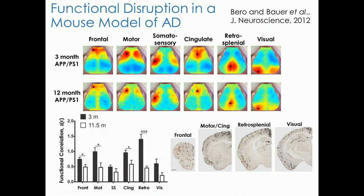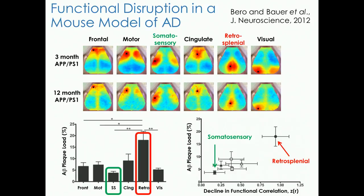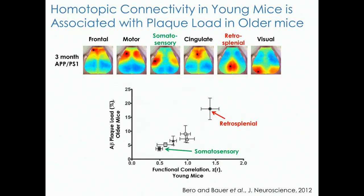You might assume this has something to do with plaque pathology, so we quantified it. There's a heterogeneous distribution of plaques — regions like retrosplenial and motor have a lot of plaques, while visual does not. Regions that harbor lots of amyloid-beta tended to decline the most, like retrosplenial, and regions with the least declined the least. But counterintuitively, connectivity in the young group was predictive of amyloid-beta plaque load in the older group: high-connectivity regions like retrosplenial harbored the most plaques.